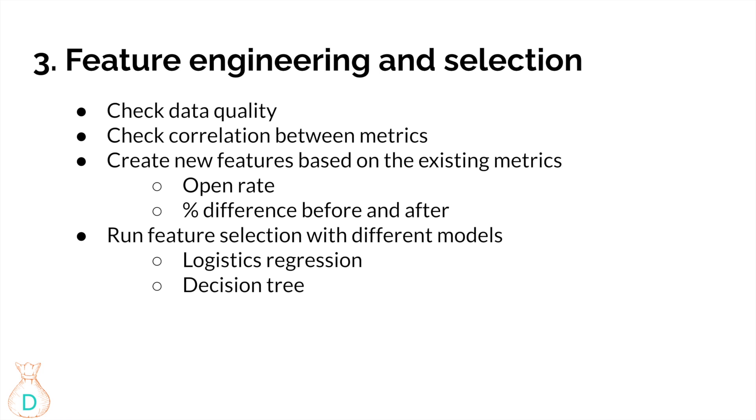And the third thing is you want to check the correlation between your metrics. So for example, if you have delivered email count and open email count as your two metrics, those two things are very highly correlated because you cannot open an email unless you already delivered an email. So what I would do in this case will be creating a new feature based on the existing metrics. So what I would do would be calculating the open rates or you can calculate percentage difference before and after.